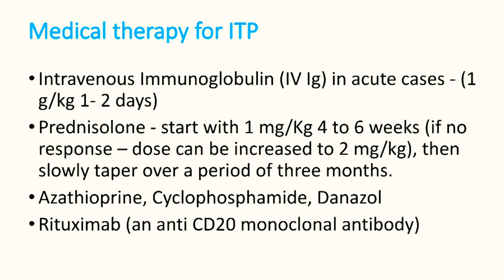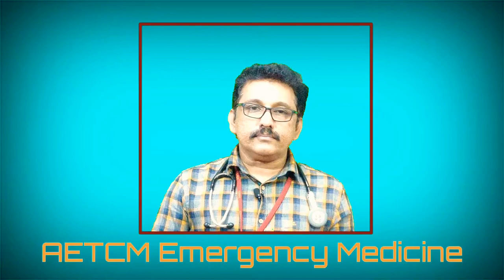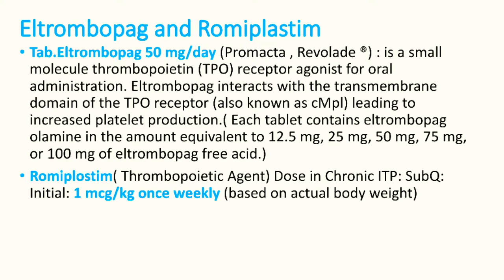Steroid-sparing agents include azathioprine, cyclophosphamide, and danazol. Rituximab, an anti-CD20 monoclonal antibody, can be used as a primary or secondary alternative. Newer drugs like eltrombopag (L-Trombopag) 50 mg per day and romiplostim 1 microgram per kg once weekly increase platelet count through bone marrow stimulation and can be used in ITP and hepatitis C-induced thrombocytopenia.